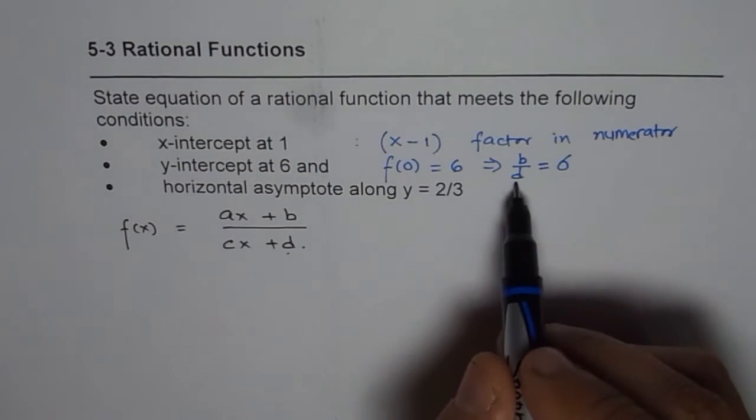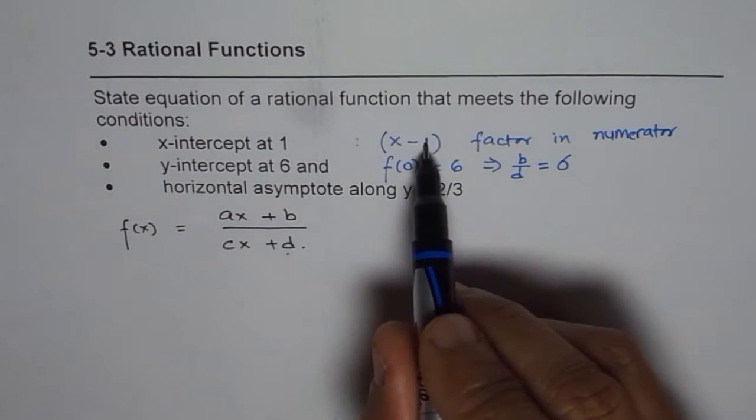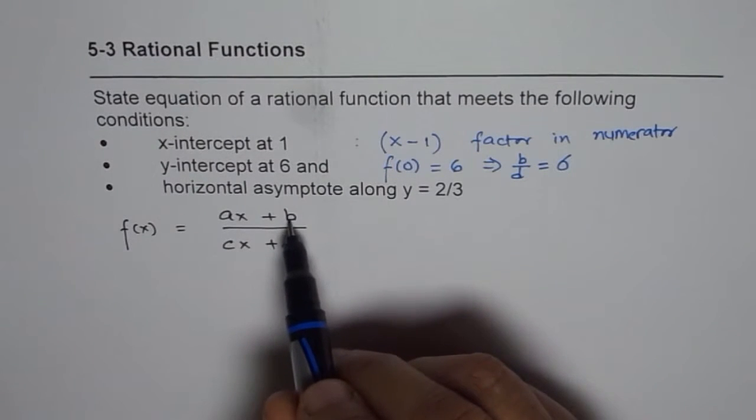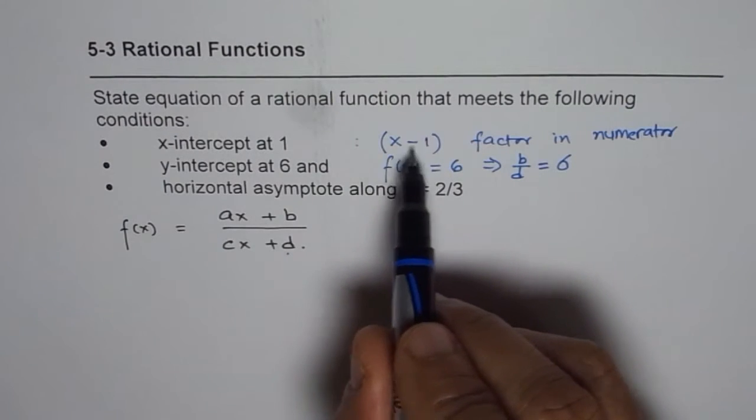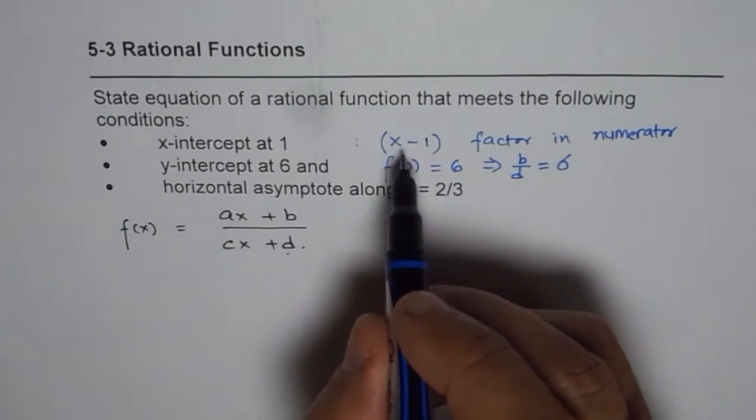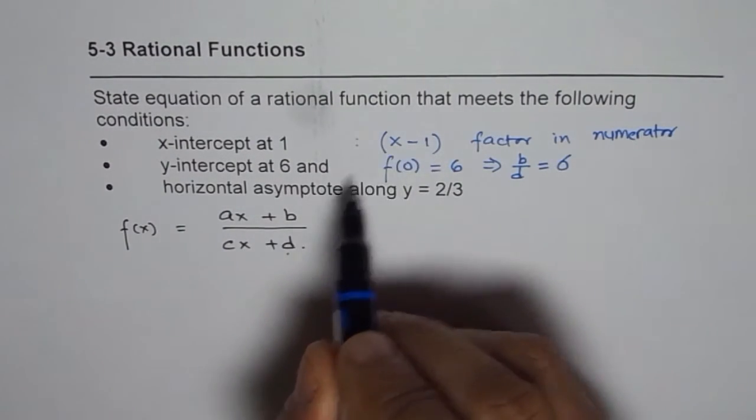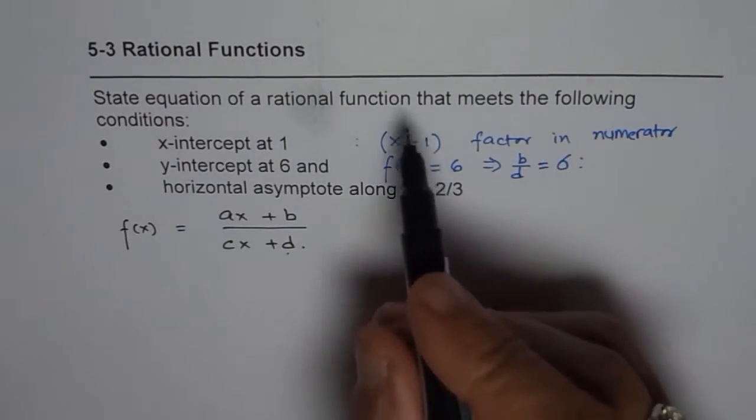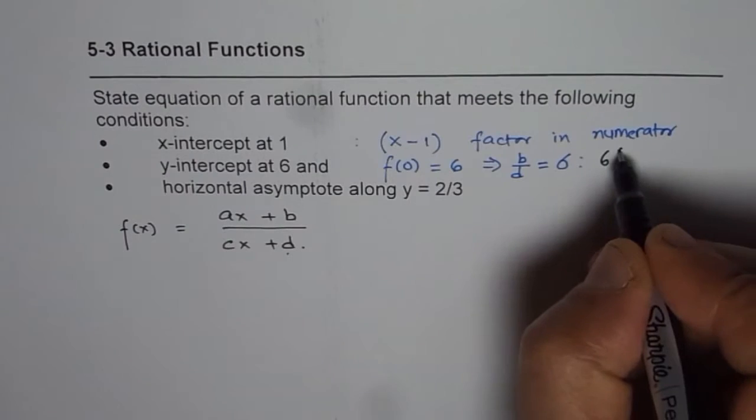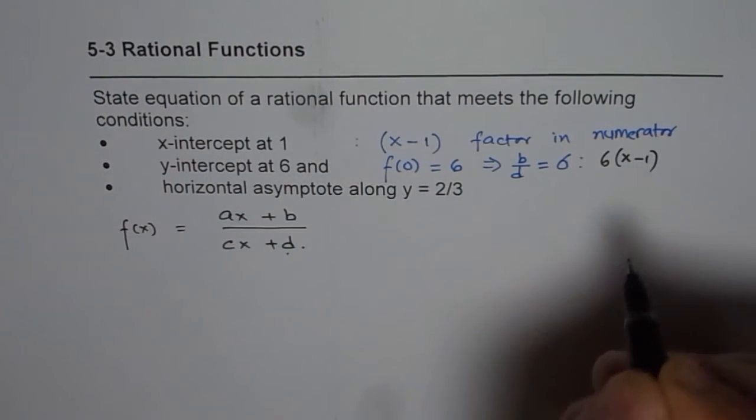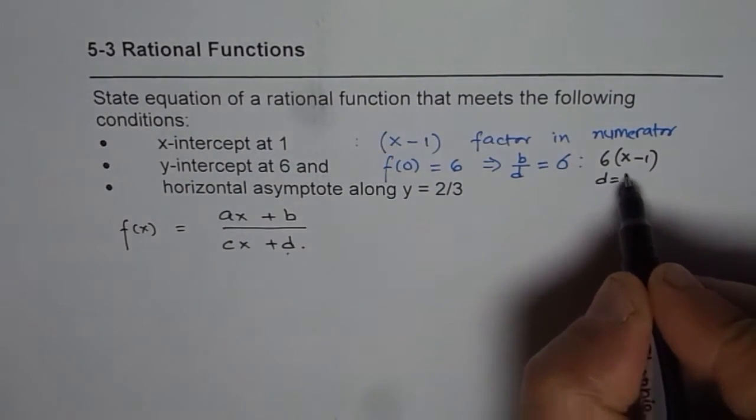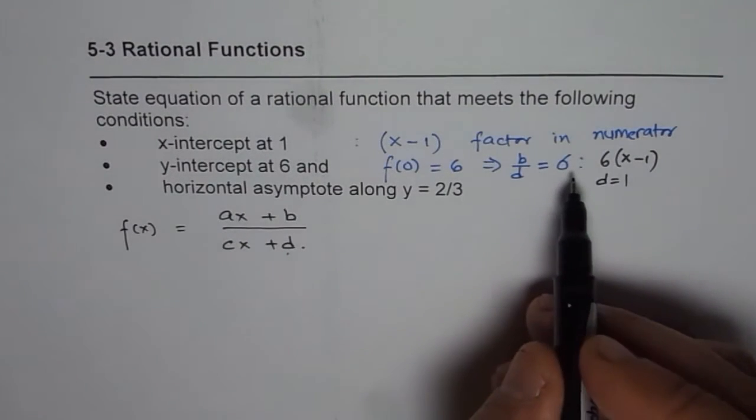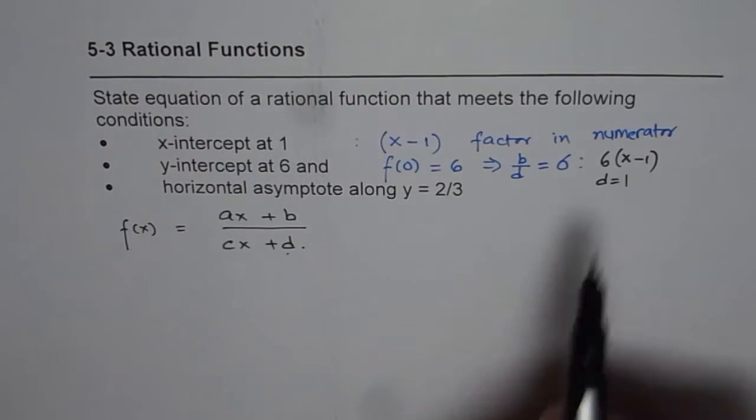So b over d is 6, which means if I make d equal 1, then b should be 6. I can get that 6 if I multiply this factor by 6. So I could have the numerator as 6 times x minus 1 and d equals 1.